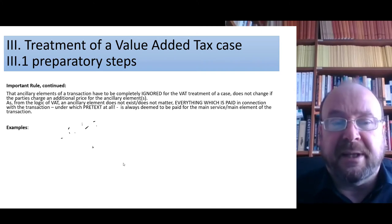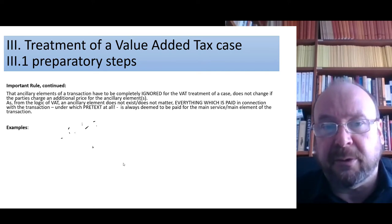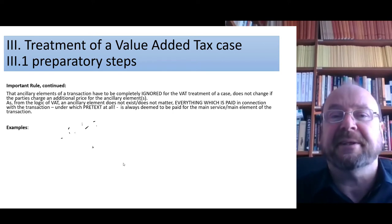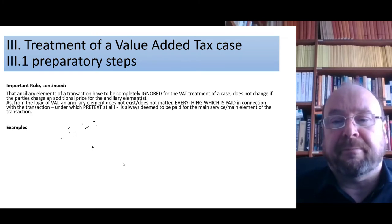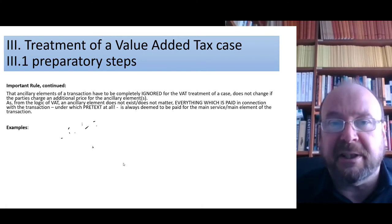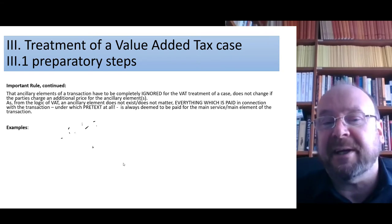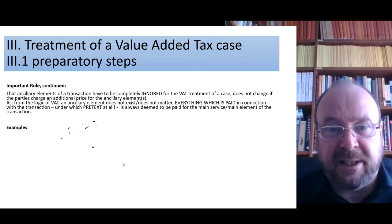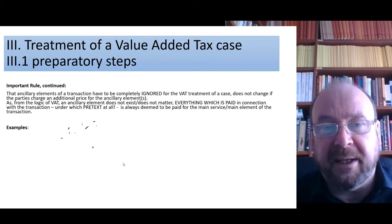Ancillary elements of a transaction can be completely ignored, which means that everything which you pay is, from the perspective of VAT, always paid for the main element. This does not change if the parties engage in applied psychology and charge additional prices for these ancillary elements. Even if you have a choice, an ancillary element does not count — everything which you pay for it is part of the payment for the main element.